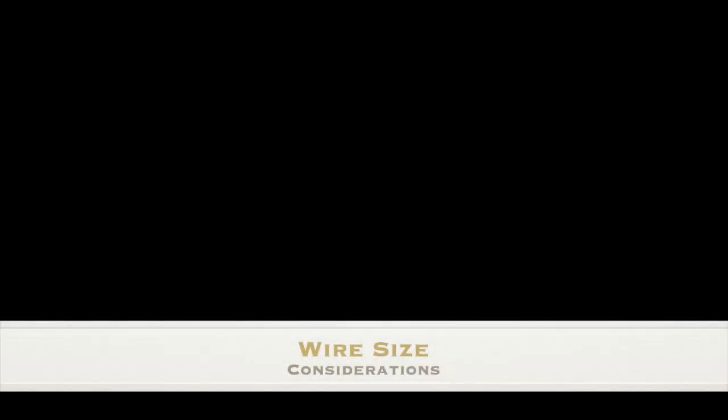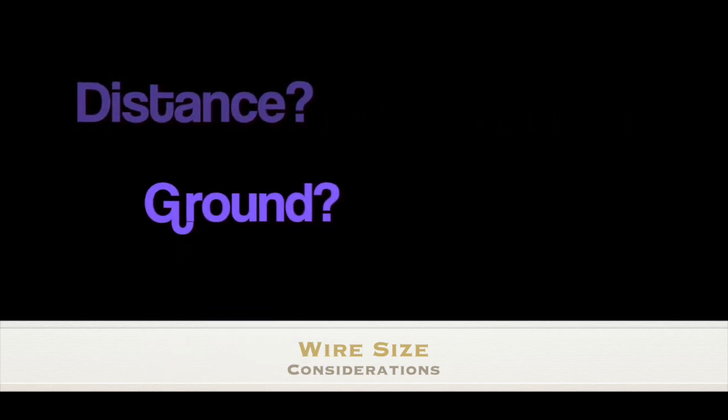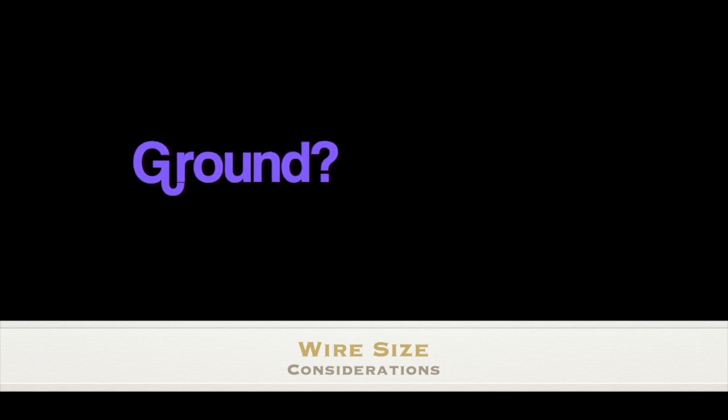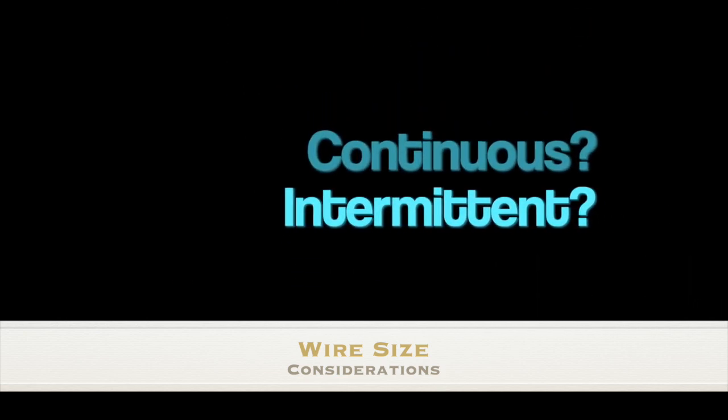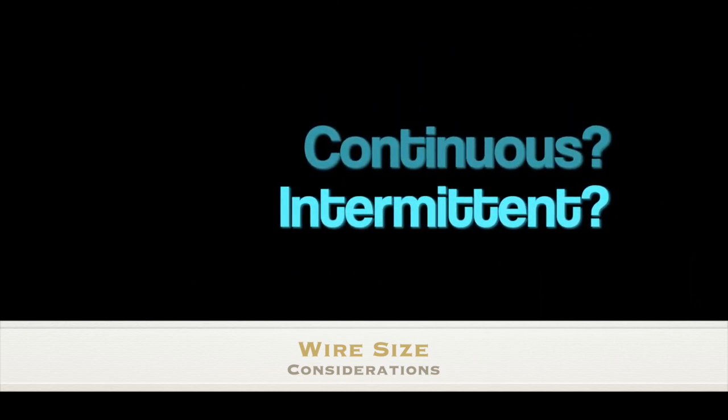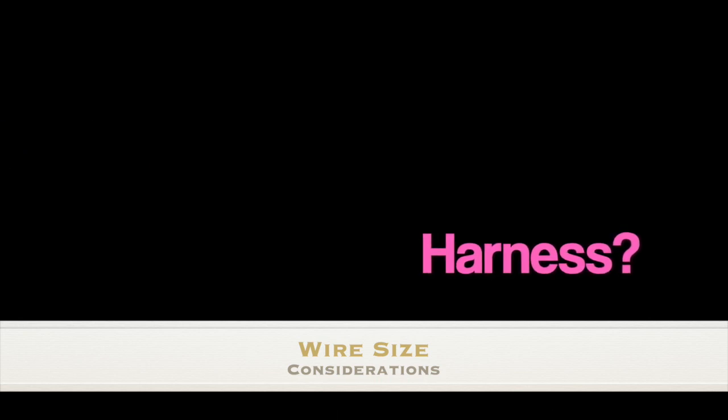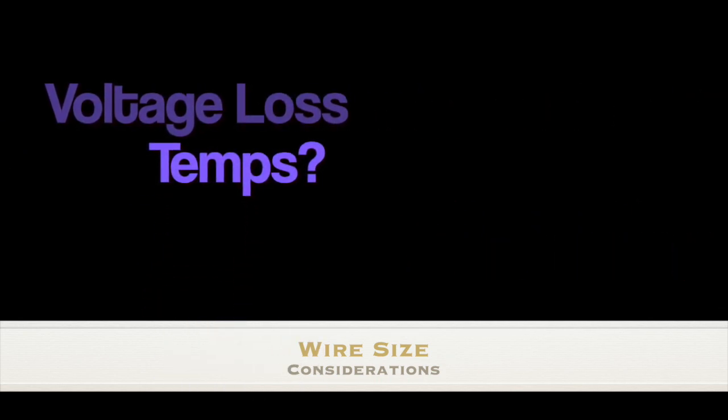So here's a list of things I consider when designing my installations. What's the distance involved? Is it using an airframe ground, or do I have a ground wire running back to the ground bus? What are the amp requirements for the component needing the power? Is it a continuous or intermittent load? Will it be in a harness or by itself? What voltage loss and conductor temps are involved?